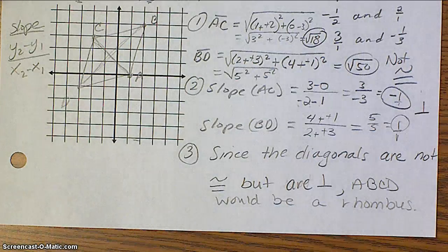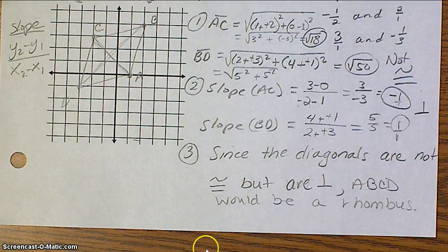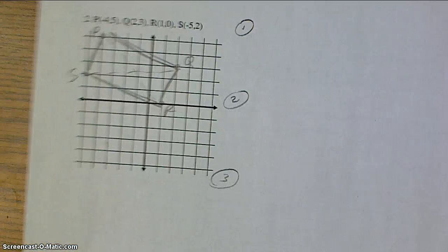Now we draw our conclusion. Since the diagonals are not congruent, but they are perpendicular, ABCD would, in fact, be a rhombus.